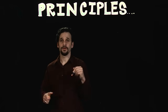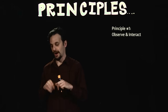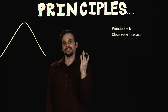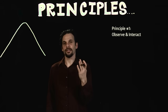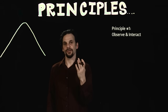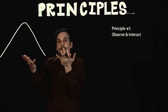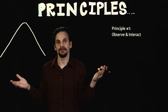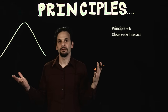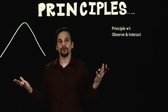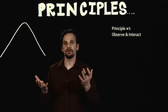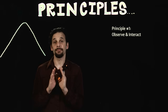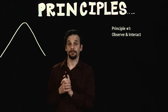Principle 1 is Observe and Interact. This is essentially what we've been talking about for this entire course thus far. Where am I? What are the forces present on my site that I need to design for? Climate, topography, water, soils, vegetation, wildlife, wind, fire, people — these are some of the elements that are part of our observations.